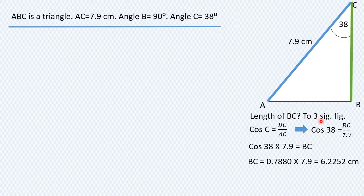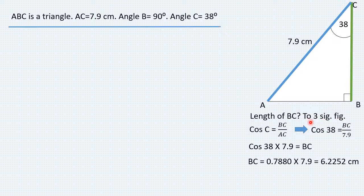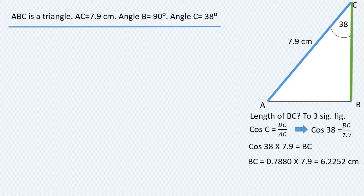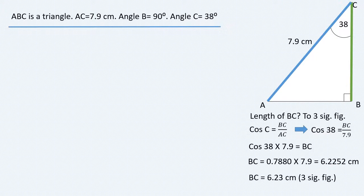because we're required to get the answer correct to 3 significant figures. So, we round up the 2, which is followed by a 5, we round it up to 3, and we get the final answer correct to 3 significant figures, 6.23 centimeters.